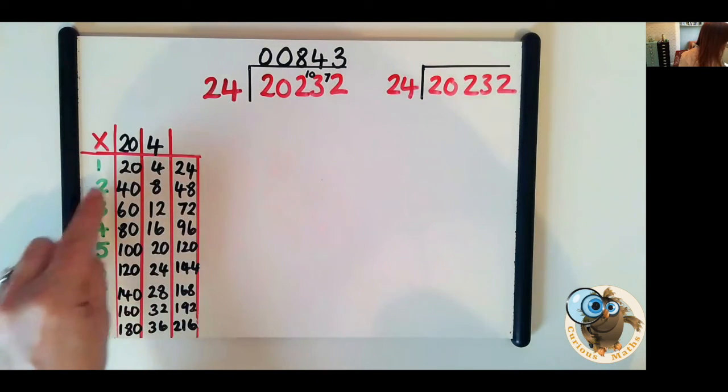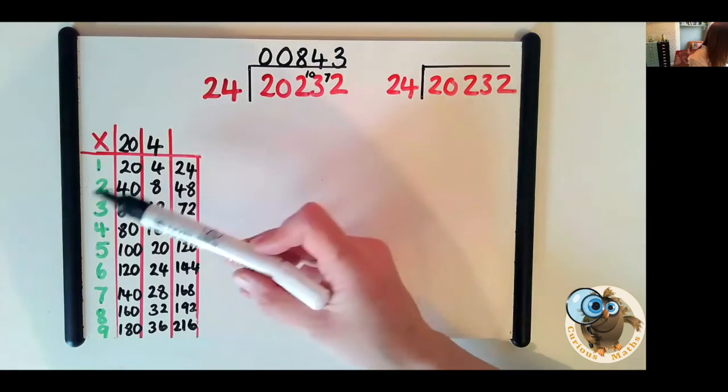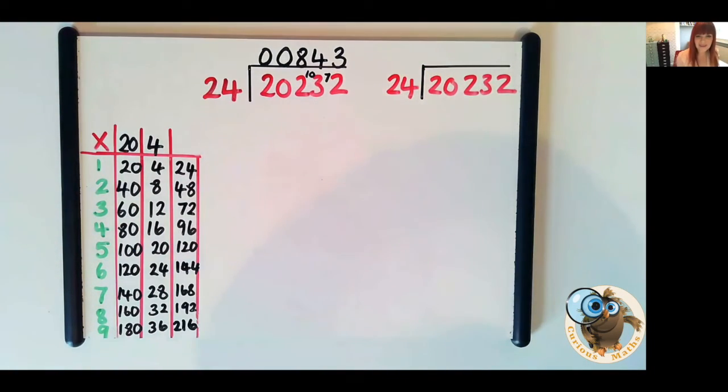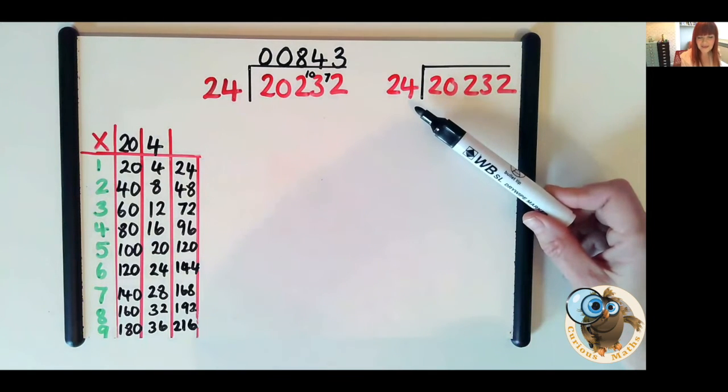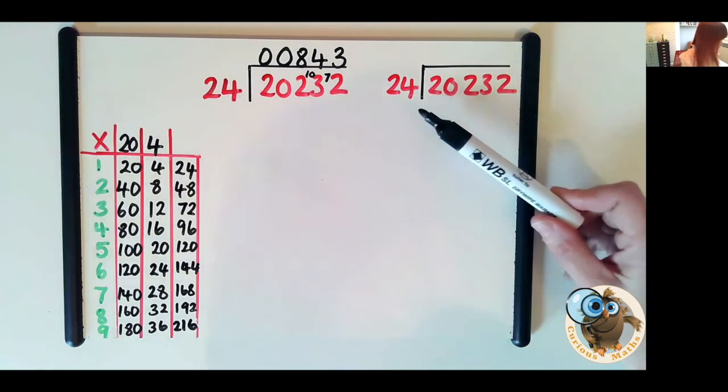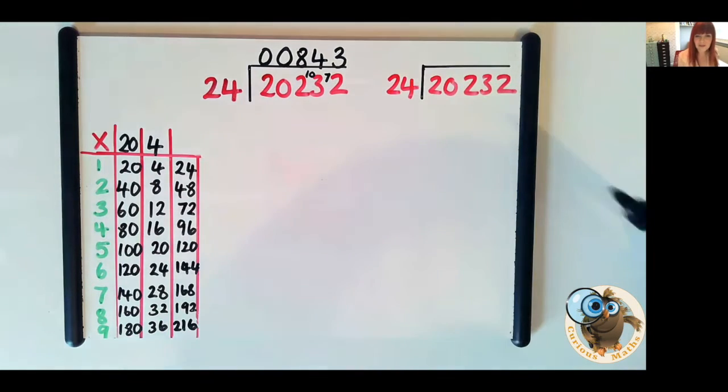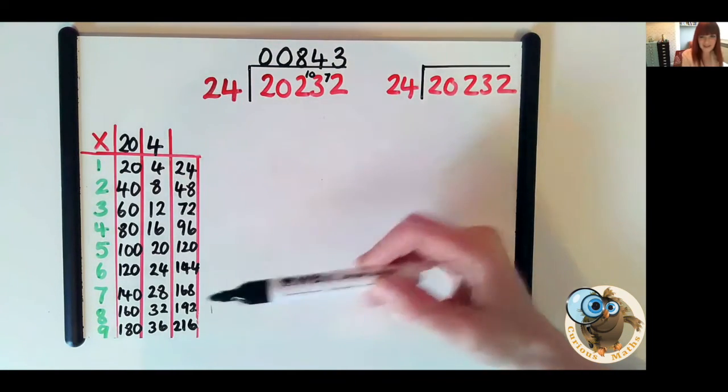So they know that two 2s are 4 so two 20s must be 40. They know that three 2s are 6 so three 20s must be 60. So it doesn't matter what the number you're dividing by is you can always use that partitioning method and split up the 10s and the ones to make it more manageable. So you split them up and then you put them back together and that is how we record it in that final column.